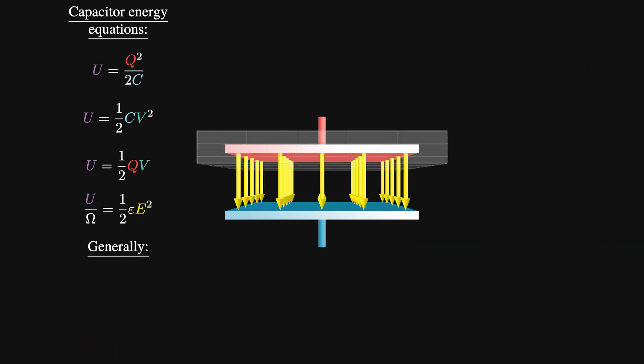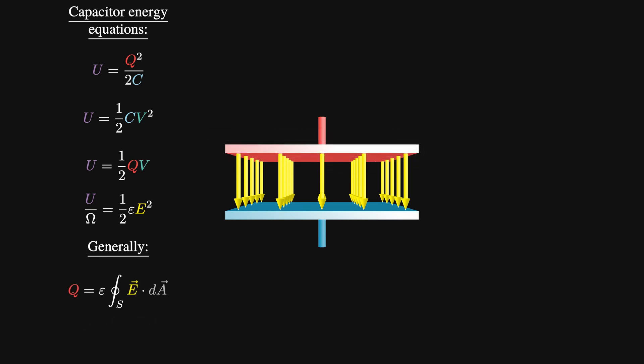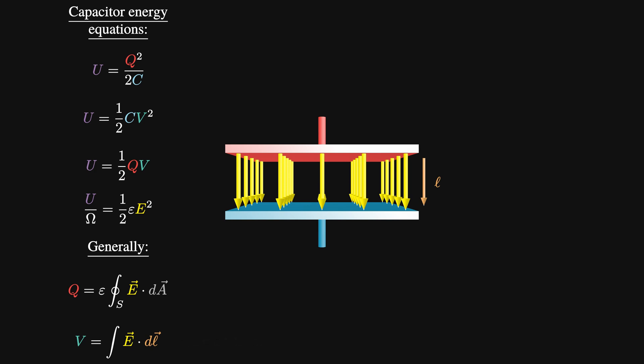In the previous video, we showed that the charge in our plates generates a field via Gauss's law, and the voltage is just the line integral of the field from one plate to another. If we write out our equation for the energy, a half times Q times V, and replace Q and V with these definitions, we get a half times epsilon times the surface integral of E with respect to DA, times the line integral of E with respect to DL.